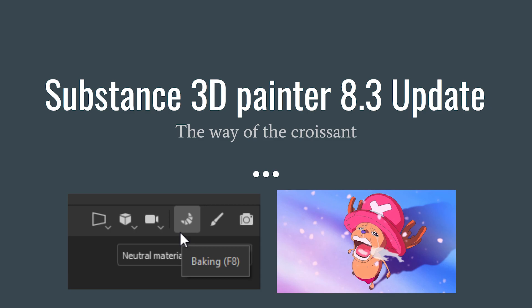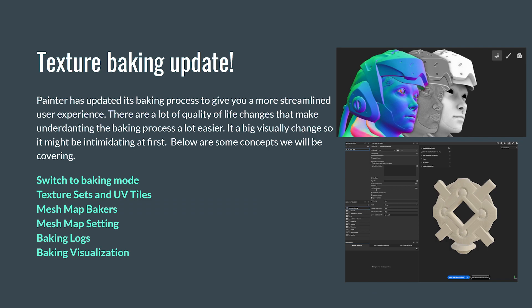One of the big updates that came with the new update to Substance Painter is a big baking update. They've enhanced it quite a bit so that we can now see our model when we're baking. This allows us to really dial in and figure out if we have any baking errors — no more guessing game. I've basically designed this to go over some of the updates, whether you're relearning baking or this is your first time.